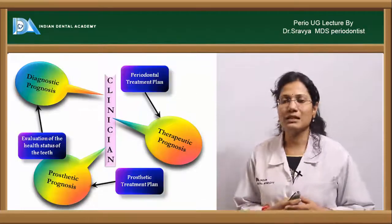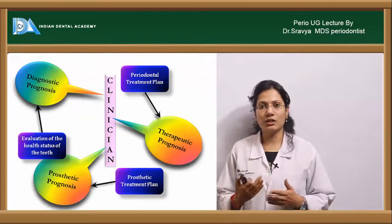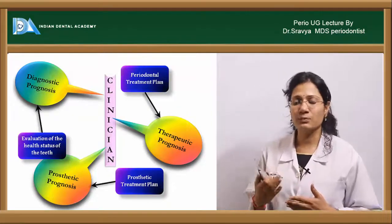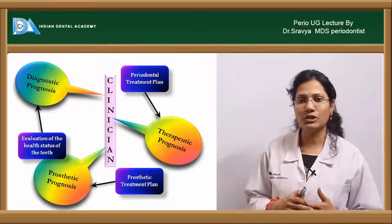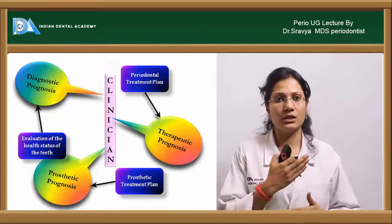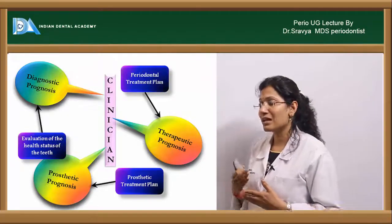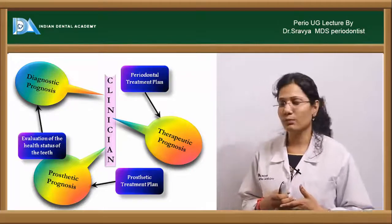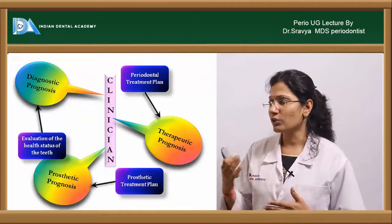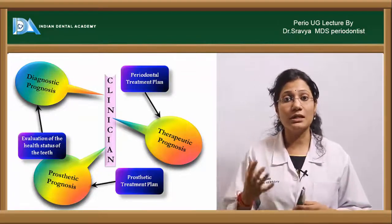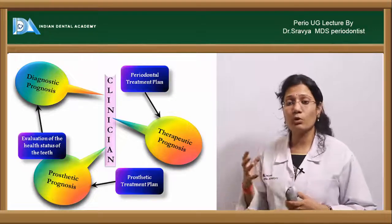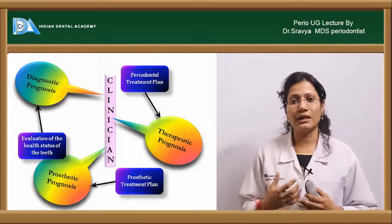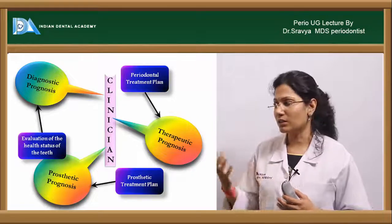Then comes the significance of prognosis on the clinician. The prognosis for the clinician can be determined as a diagnostic prognosis, as a prosthetic prognosis, and as a therapeutic prognosis. When you see the diagnostic prognosis, it means the prognosis can be incorporated in diagnosing a periodontal disease.